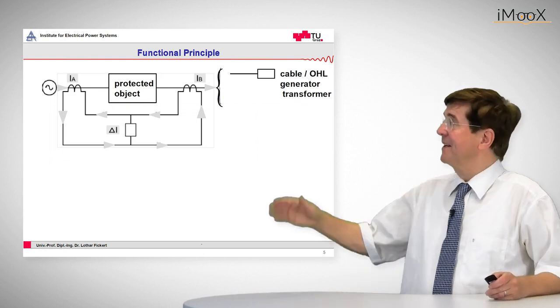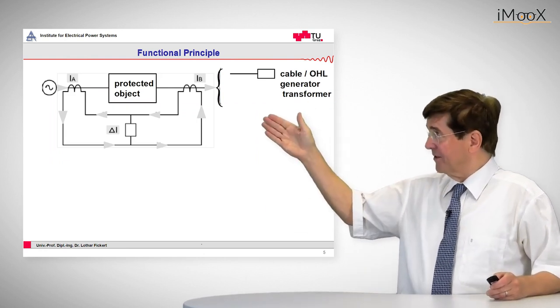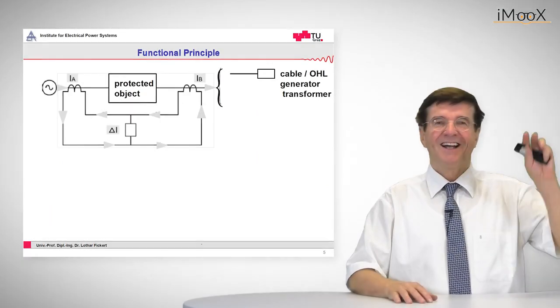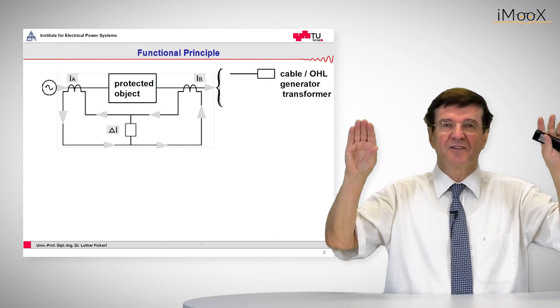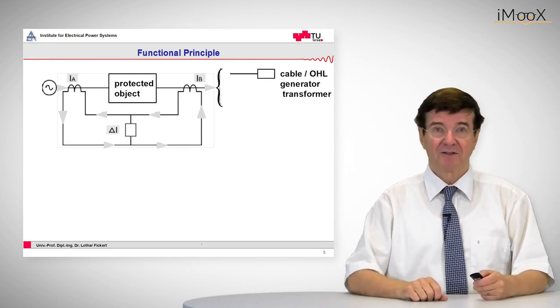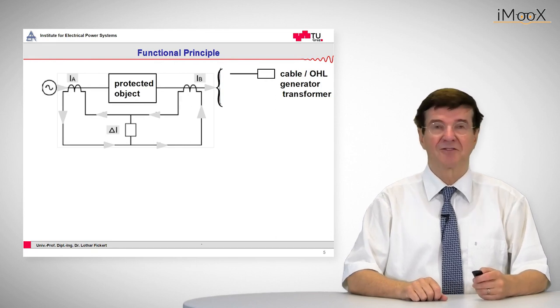So we see here a protected object which may be a cable, overhead line, generator, or a transformer. And to the left side and to the right side of this protected object, we have a set of current transformers which transform the primary current into secondary values.